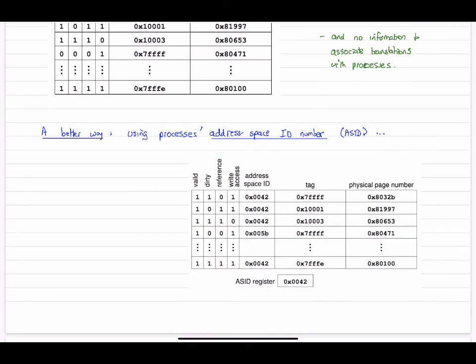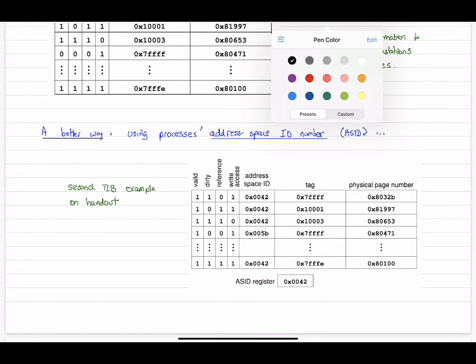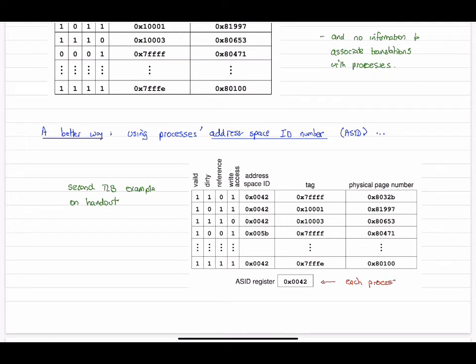With the same status bits, but now we've got one extra field here called address space ID. So again, this is the second TLB example on the handout. And so here is the address ID for, say, process number two. Every process has their own unique ID number.